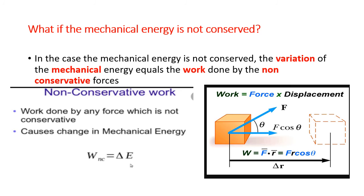Now, what if the mechanical energy is not conserved? In that case, the variation of the mechanical energy equals the work done by the non-conservative forces. So, work of non-conservative forces equals delta E, which means E-final minus E-initial. And the work done by a force equals the dot product of the force with the displacement of the object: W equals F dot R equals F times R times cosine theta.